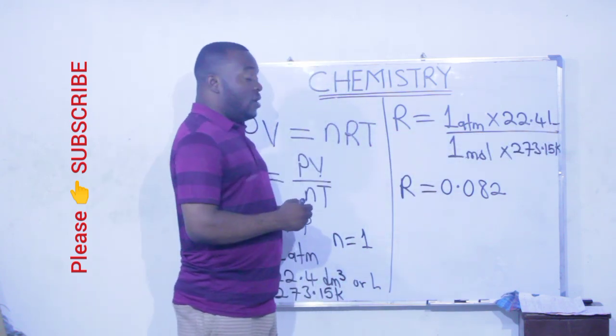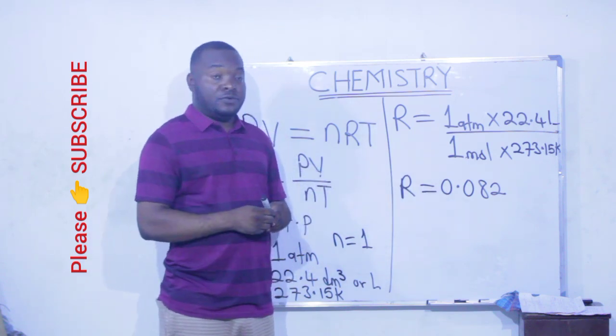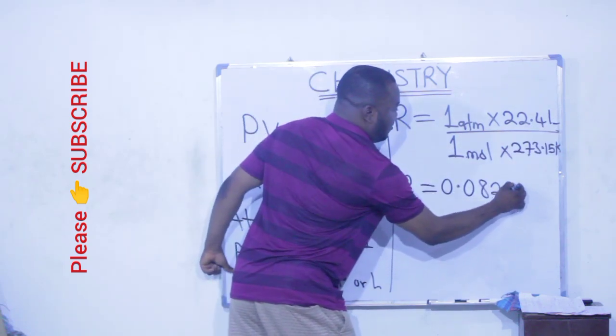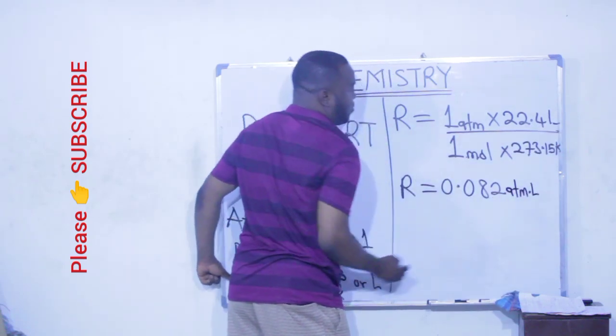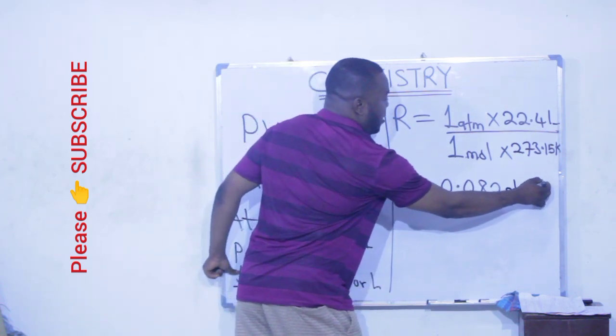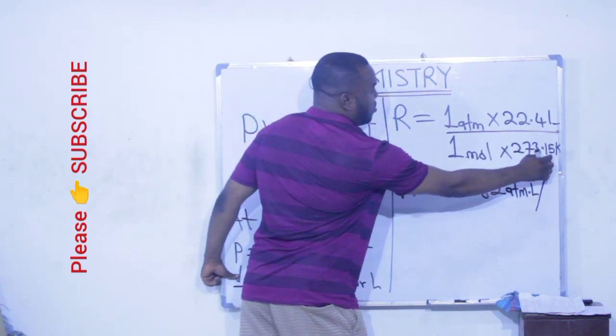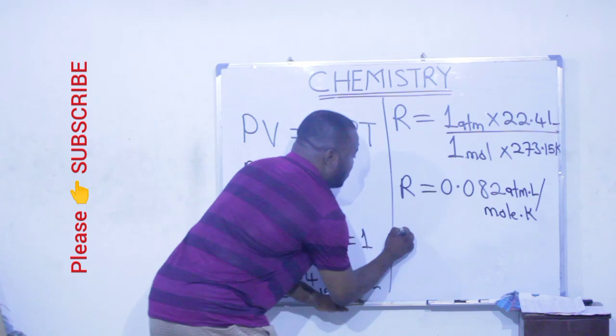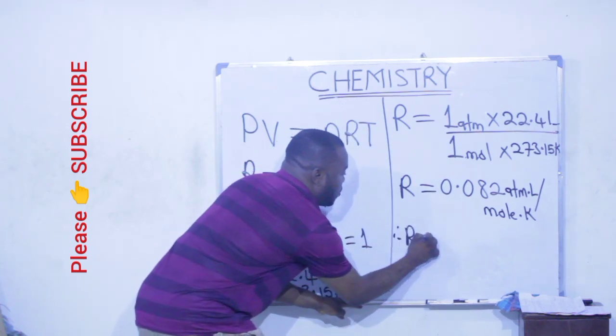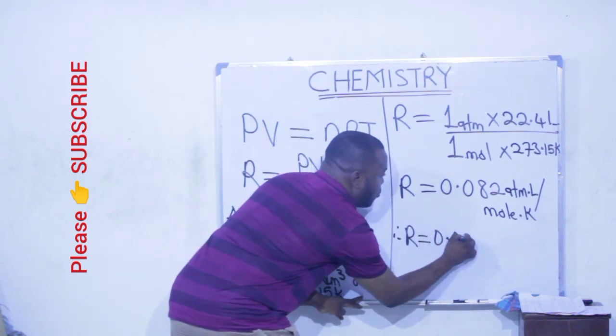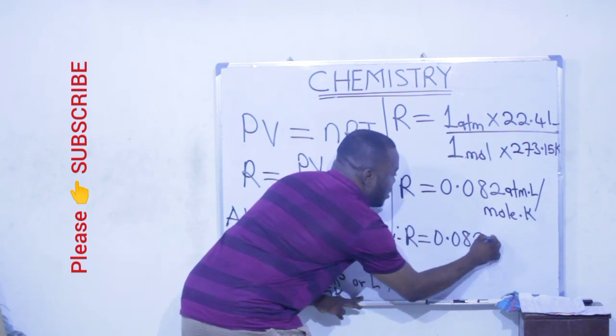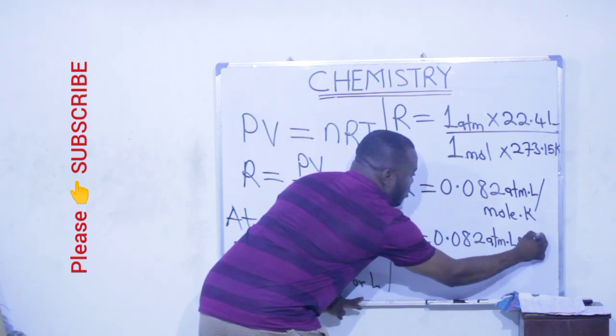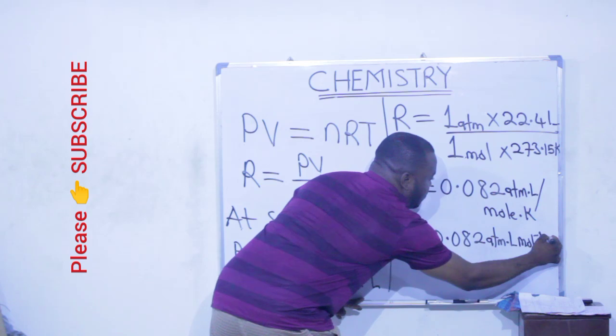Now let us compute the unit of this R. We use atm multiplied by liter gives us atm liter divided by mole multiplied by temperature in Kelvin. That means our R value becomes 0.082 atm liter per mole per Kelvin.